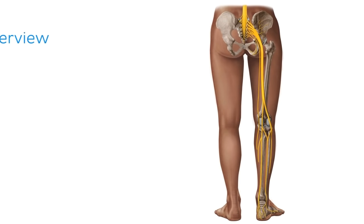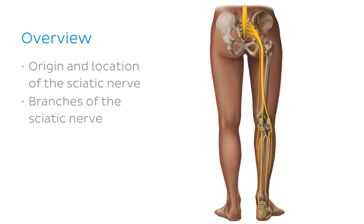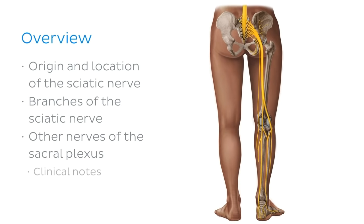Before we begin, I'd like to give you a quick overview of what we're going to talk about in this tutorial. First of all, we're going to discuss the origin and location of the sciatic nerve. Then we'll take a look at the branches of the sciatic nerve and some other nerves of the sacral plexus. Lastly, we'll conclude our tutorial with some clinical notes about sciatica.